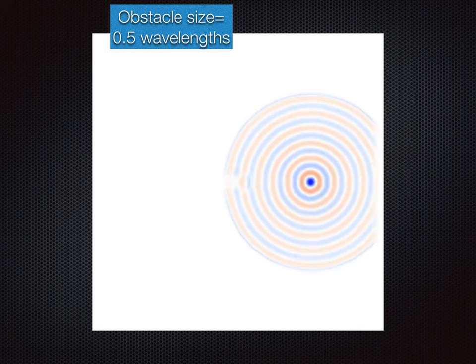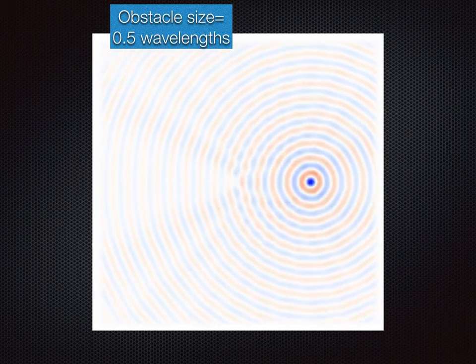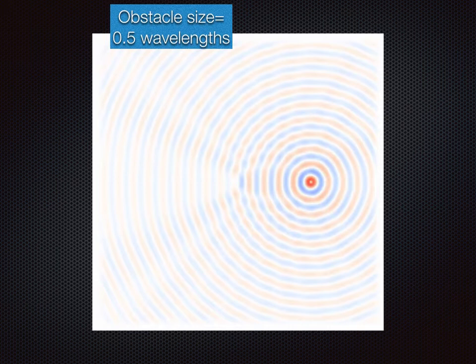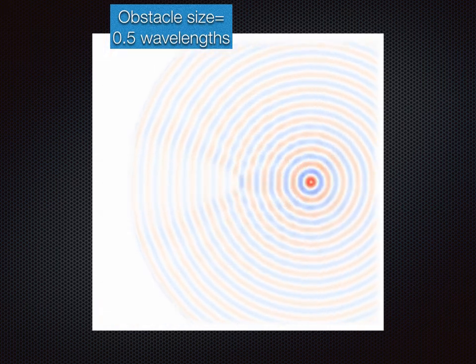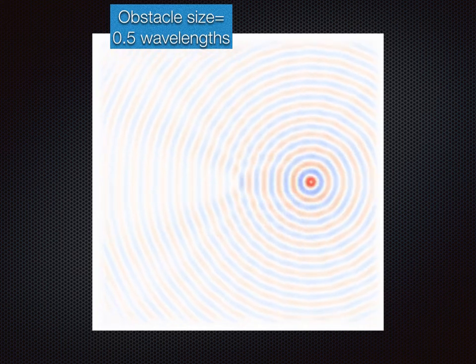We start the simulations with a small obstacle of size 0.5 wavelengths. This is a regime when wave propagation is essentially unaffected by the obstacle size as it is much smaller compared to the wavelength.